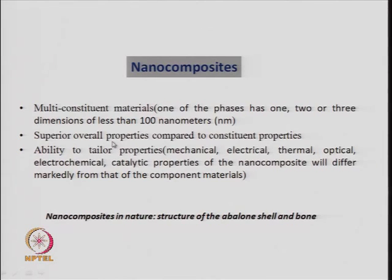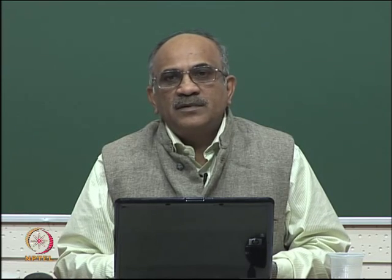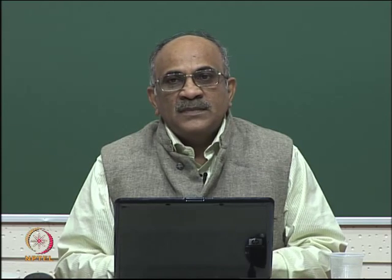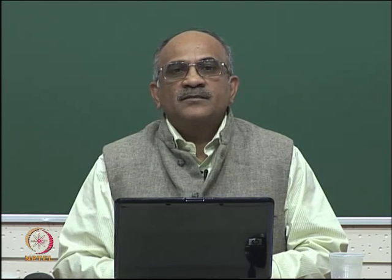Nano composites are important because they will have superior overall properties compared to the constituents. You have two constituents A and B — one is a nano particle and B can be a nano particle or not. If you measure the property of A and the property of B individually, they have some values, but when you make the composite and measure the same property — whether electrical, magnetic, or optical — the property of the composite is better than either A or B alone. Such nano composites will be superior in their properties compared to their individual components.